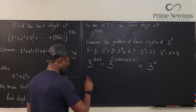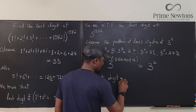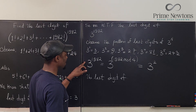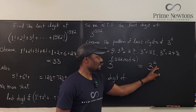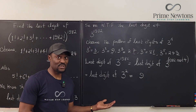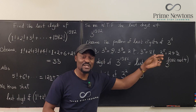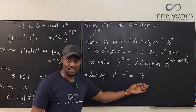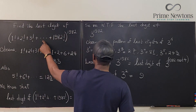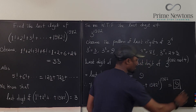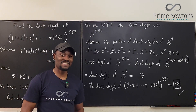So 3^2 has the same last digit as 3^1982. The last digit of 3^1982 is the last digit of 3^(1982 mod 4) = 3^2 = 9. This is the last digit of 1982^1982, and combined with the factorial sum result, the answer is 9. Never stop learning — those who stop learning stop living. Bye bye.